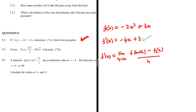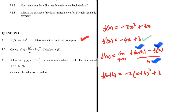That is f prime of x using first principles. We have f(x+h) and f(x) divided by h. It will get complicated if we do it all in one step, so let's find f(x+h) separately. In place of x we substitute x+h, giving us: minus 2 times (x+h) squared, plus 3 times (x+h). Expanding: minus 2 times (x² + 2xh + h²), plus 3x + 3h.